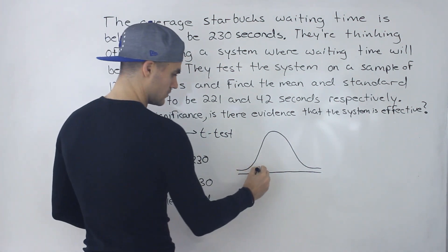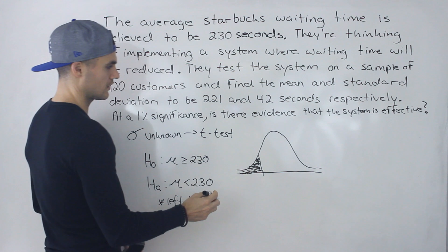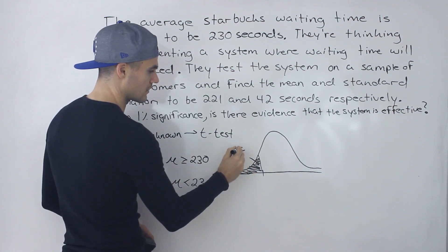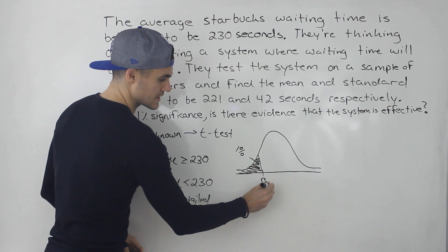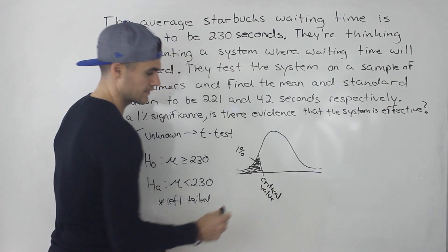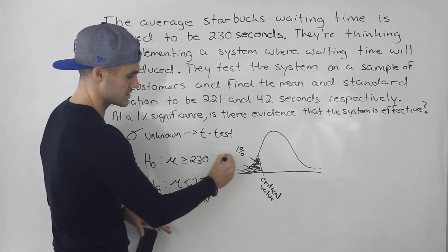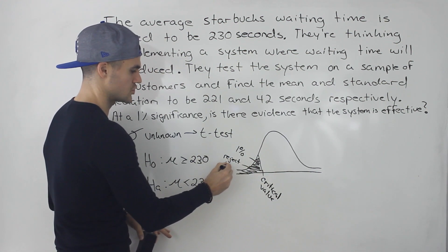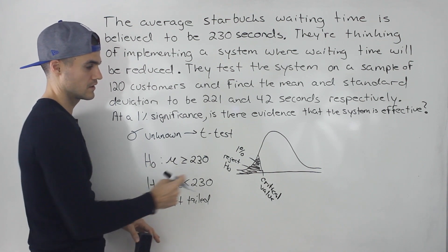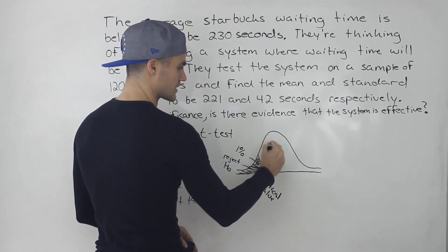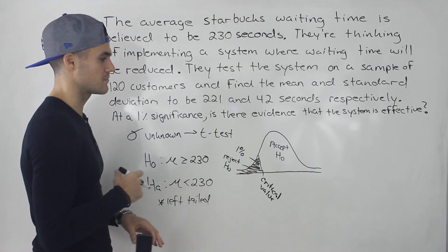There's going to be one critical value and one rejection region on the left side. Because it's 1% significance, that left-tail area is 1%. If the test statistic falls in the rejection region, it shows the system is effective and we reject the null. If it falls outside, we continue to accept the null — meaning there won't be evidence that the waiting time is reduced.